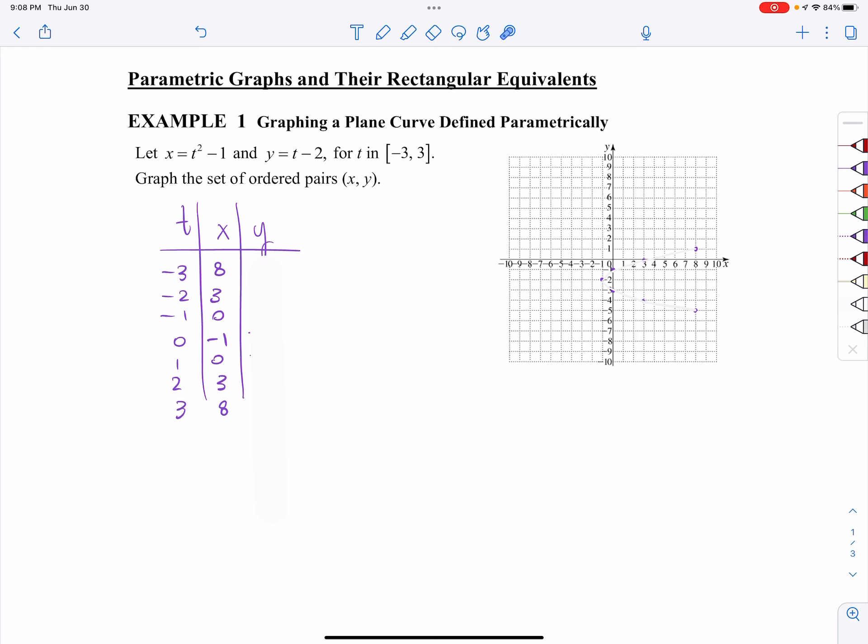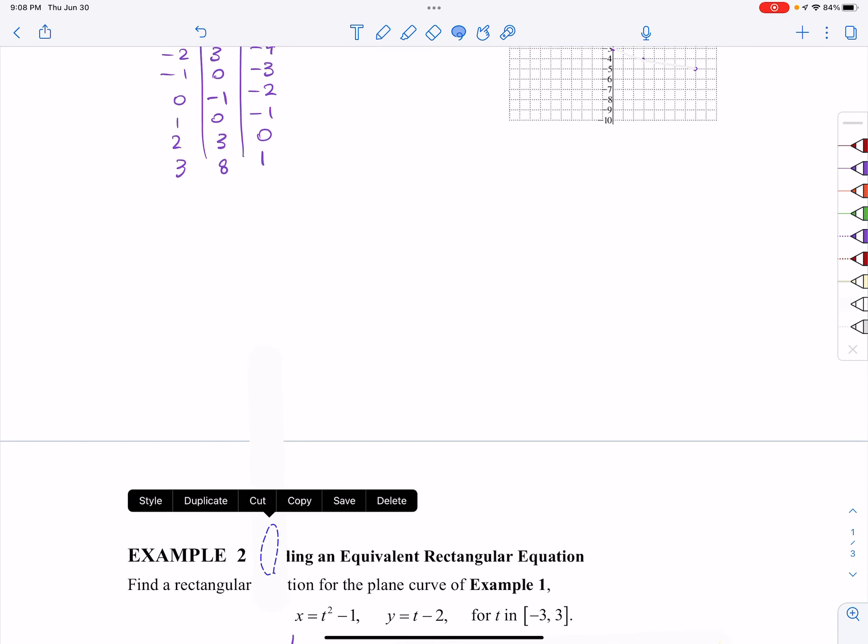Let's do the same thing for our y equation. We have negative 3 minus 2 is negative 5, negative 2 minus 2 is negative 4, negative 3, negative 2, 1, 0, and 1.